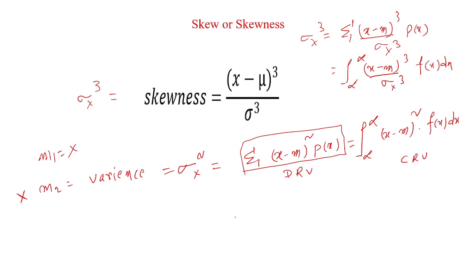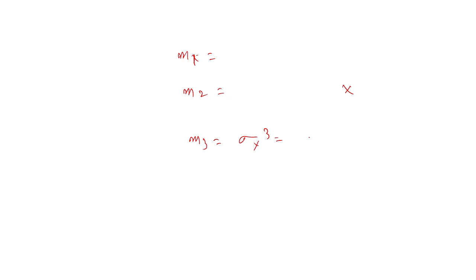Here, m always means the first average in all cases — that is, E of X, expectation, mean, or averaging process. So this is about skew: if the first mean m1 is not satisfied, then we go for the second mean; if the second mean is not satisfied, then we go for the third mean, or skewness, denoted with sigma x cubed. Thank you. If you have any doubts or suggestions, you can send them to me.